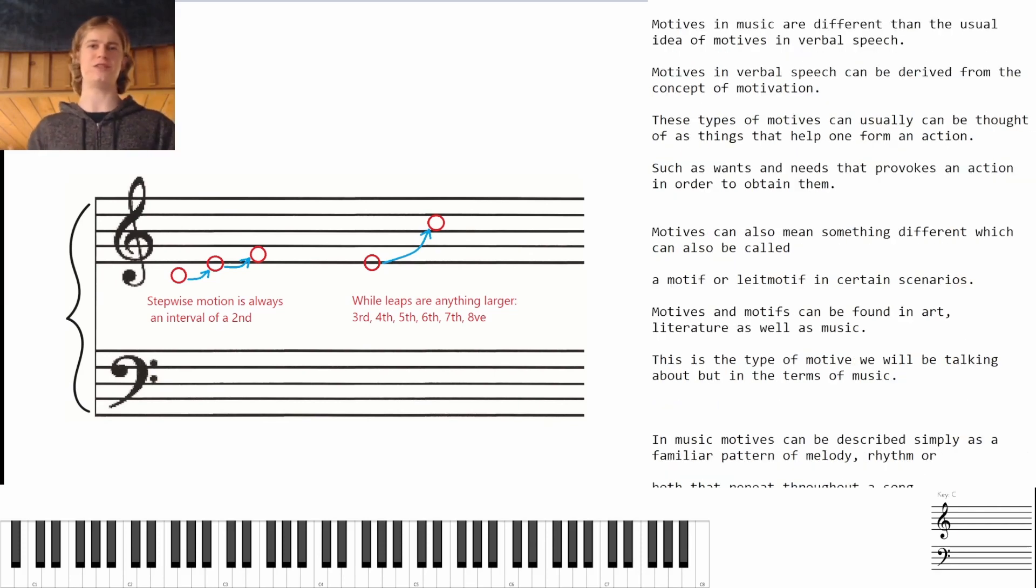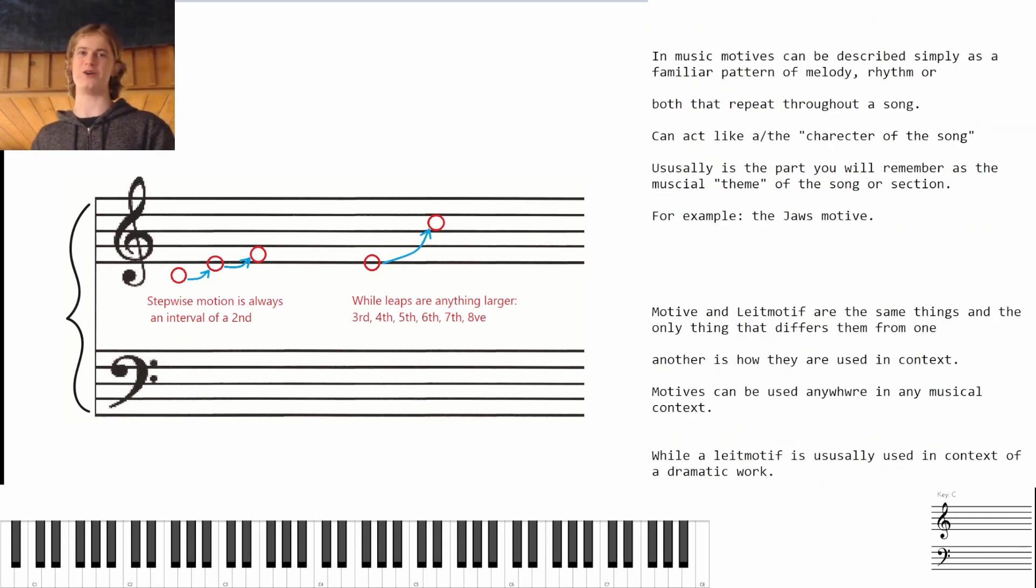Motives in music are different than the usual idea of motives in verbal speech. Motives in verbal speech can be derived from the concept of motivation. On the other hand, motives can also be something different which can also be called a motif or a leitmotif in certain different scenarios. Motives and motifs can be found in art, literature, as well as music. This is the type of motive we will be talking about but in terms of music. Of course, music is also an art form.